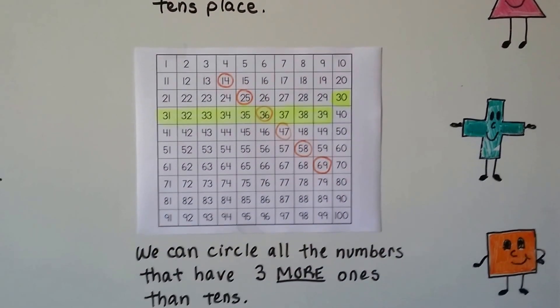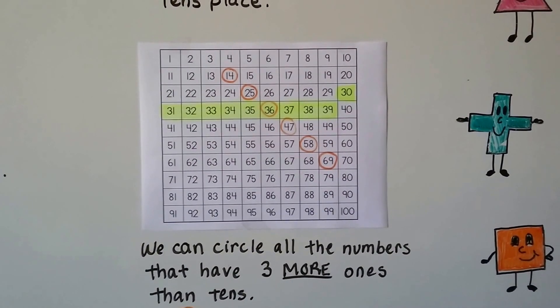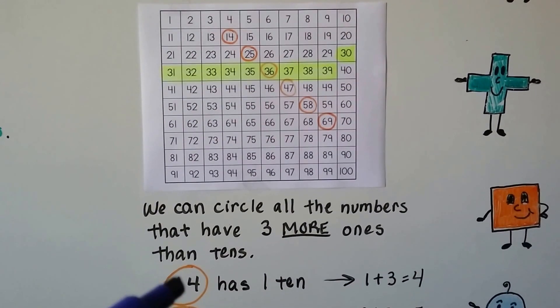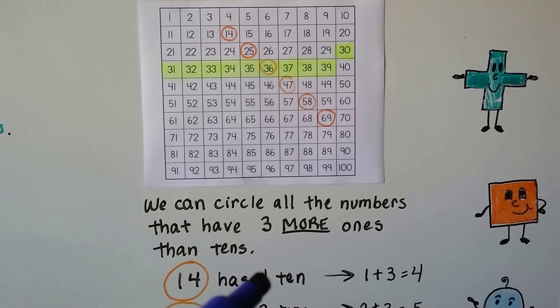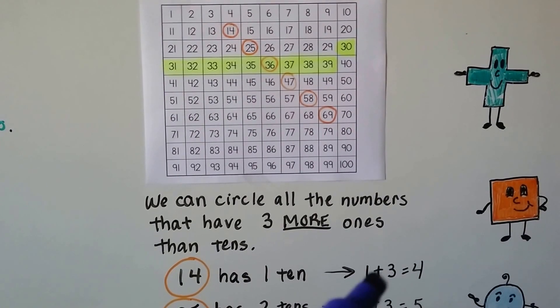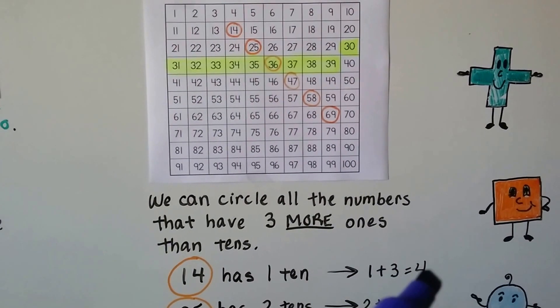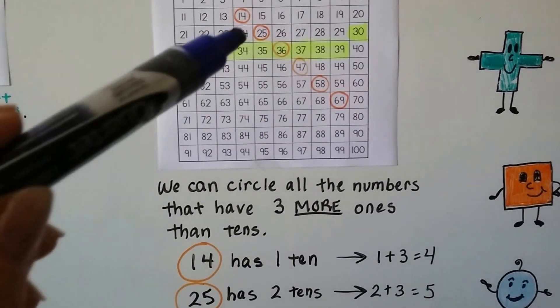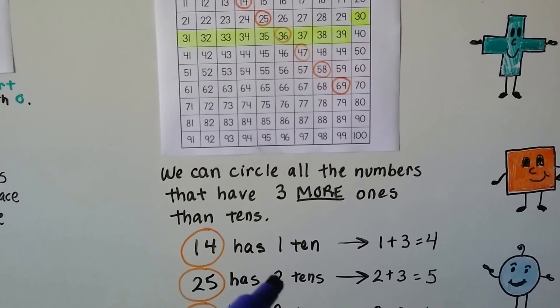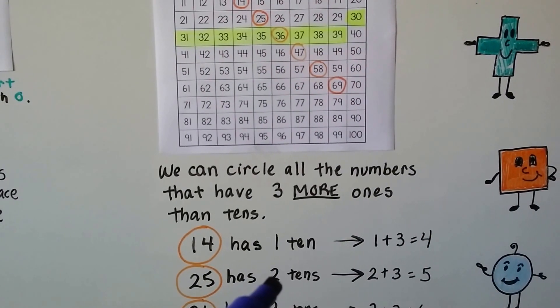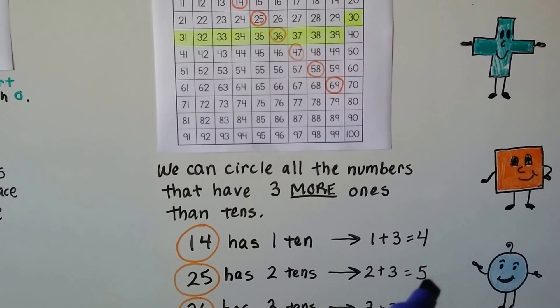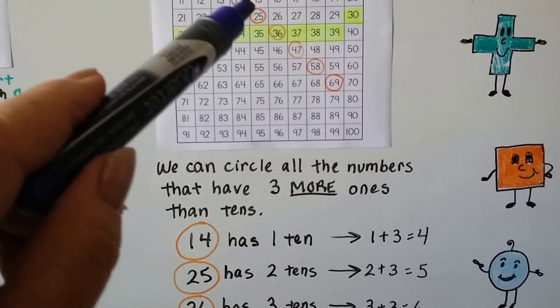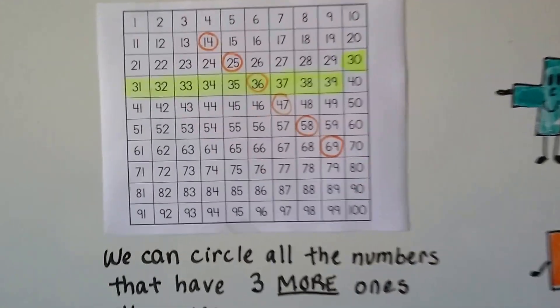Then we can circle all the numbers that have 3 more ones than tens. So that's tricky. So I circled 14. 14 has 1 ten. For it to have 3 more ones than tens, that would be 3 more than 1. That would be 1 plus 3. So it would have to have 4 ones. So that would be a 14. I circled the 25. It has 2 tens. And to have 3 more ones than it has tens, we would have to add 3 to that 2 to get a 5 for the ones place.